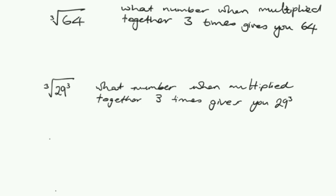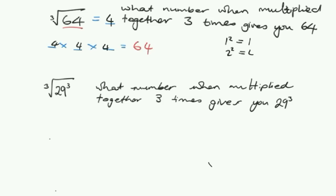We have a very similar story with the cube root. If we're looking for the cube root of 64, we're asking: what number multiplied together 3 times will give me 64? You should know immediately that it's 4 times 4 times 4, which is 64. So the cube root of 64 is 4. It would be really helpful to learn off by heart: 1 squared is 1, 2 squared is 4, all the way up to 12 squared is 144. Similarly, 1 cubed is 1, 2 cubed is 8, all the way up to 6 cubed is 216. Write those down and learn them, because it will help you quickly identify cubes, cube roots, squares, and square roots.